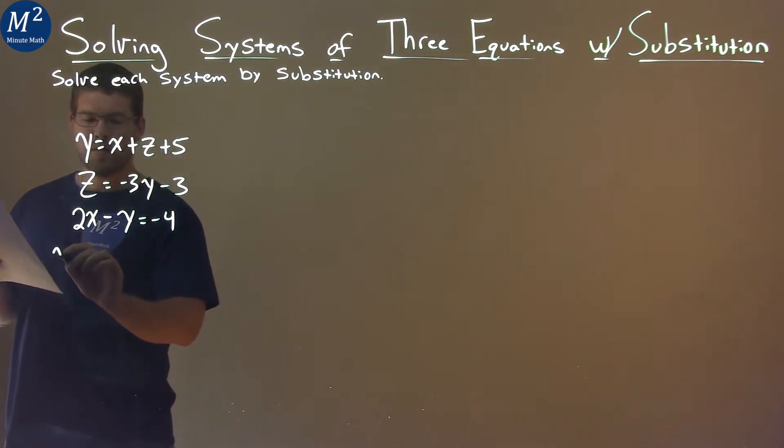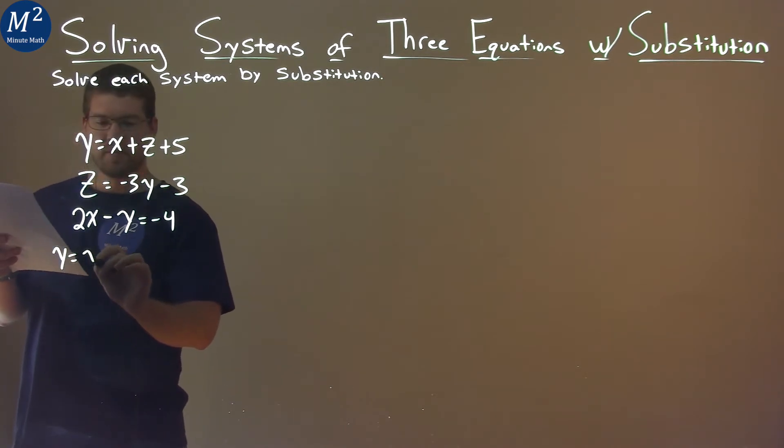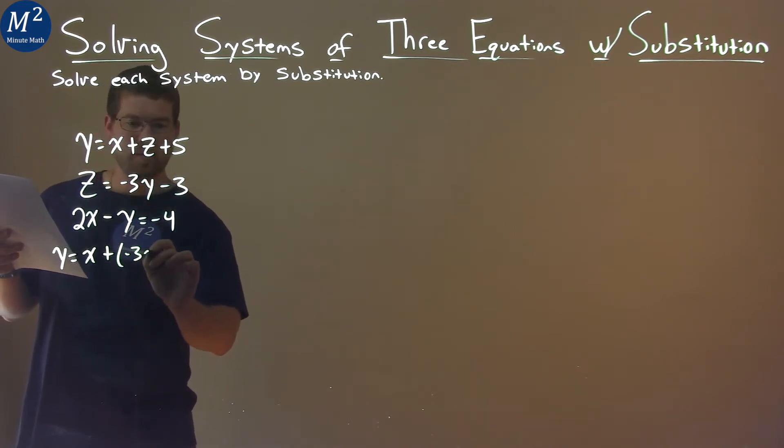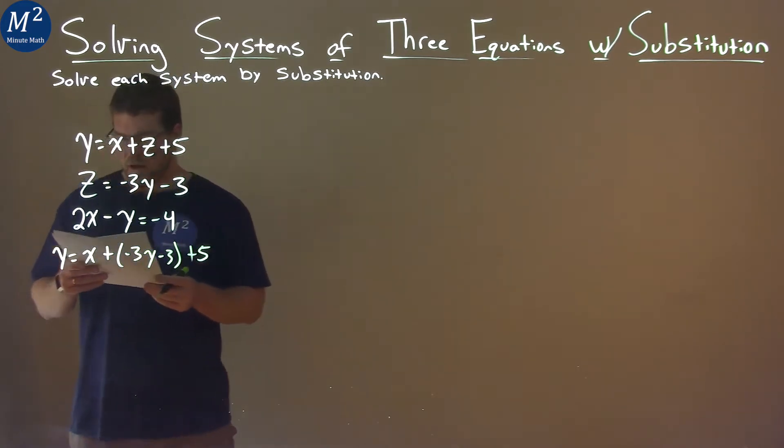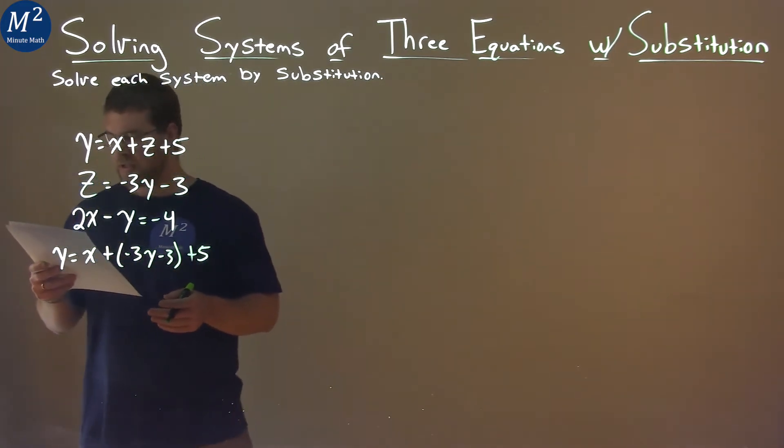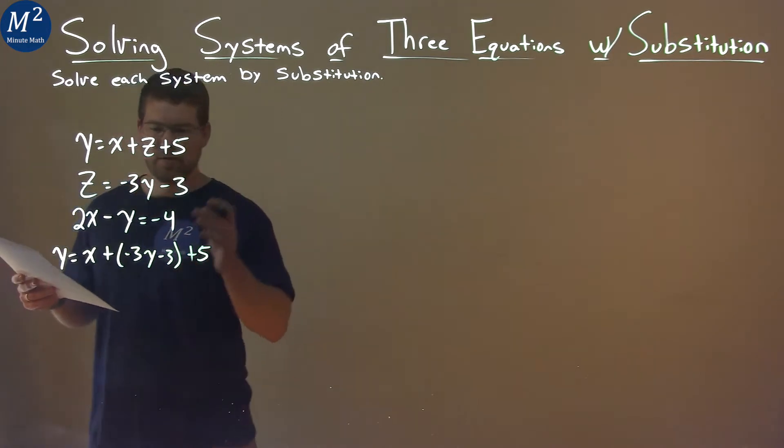So we have y equals x plus, and now we're inserting the z value, negative 3y minus 3, and then we have plus 5. And so now I'm going to simplify this and actually get x by itself.